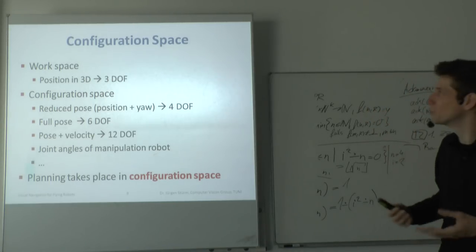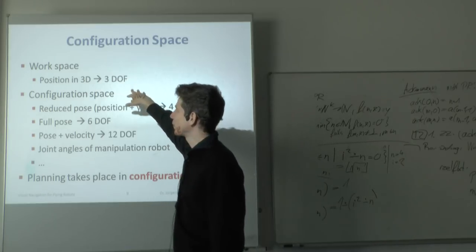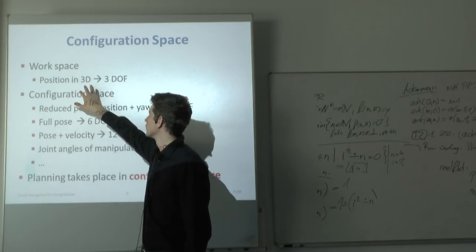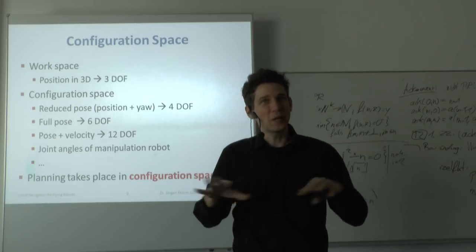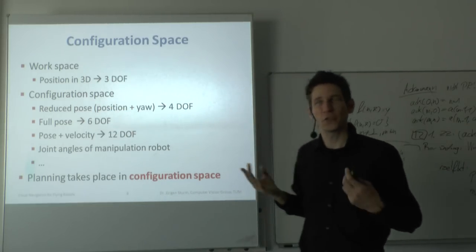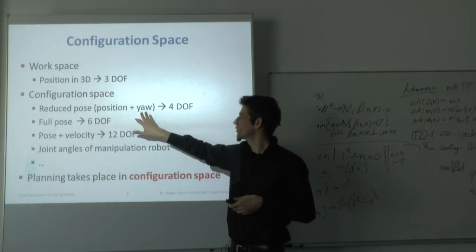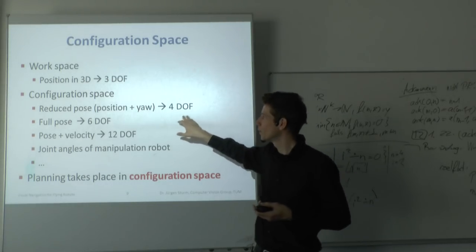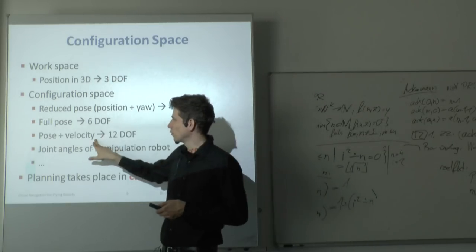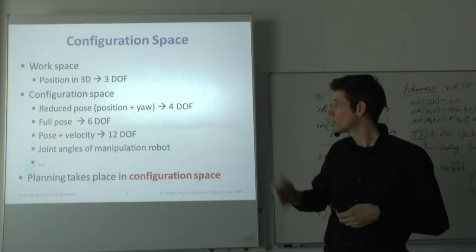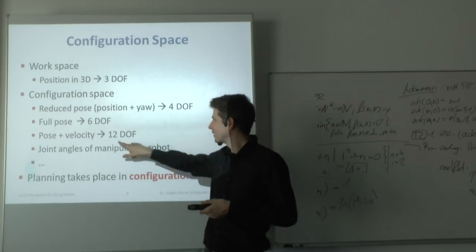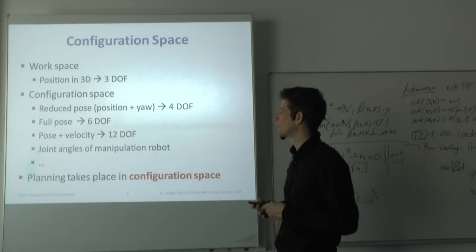Configuration space is in principle a space. In the simplest case, you can think of it as the workspace of your robot — planning in 3D with three degrees of freedom, or in 2D for a plane. However, since the orientation of the piano is crucial, including it gives four degrees of freedom; including full orientation gives six. For path planning problems like flying through a tilted window, you might also need to include velocity and acceleration, which increases the dimensionality of the planning problem.